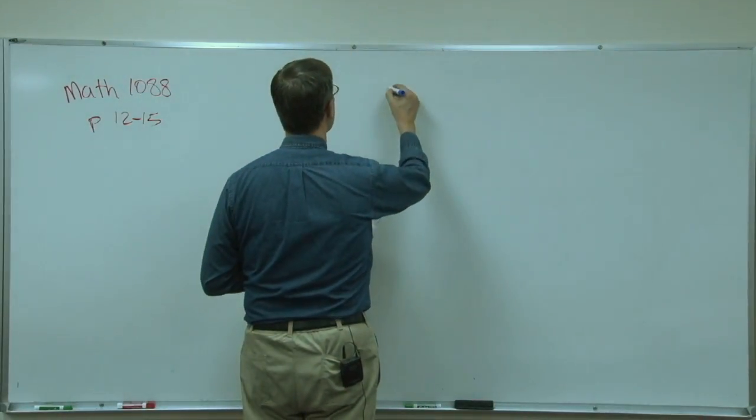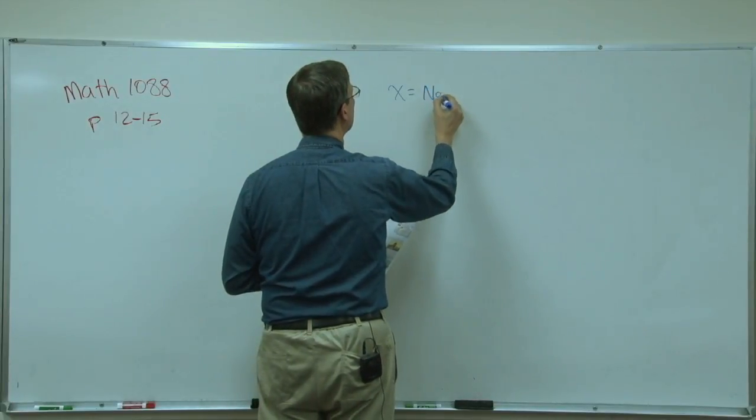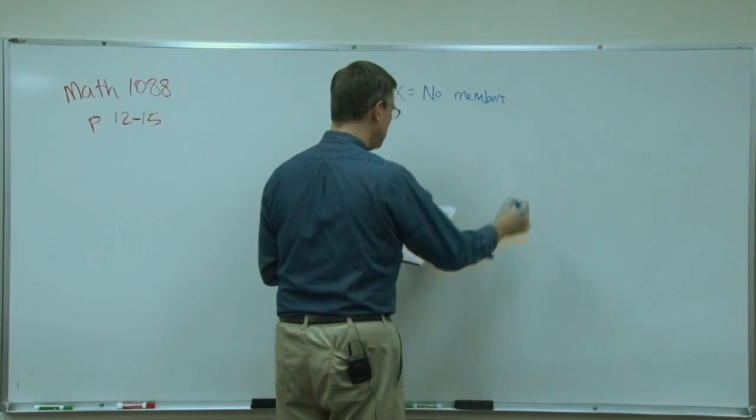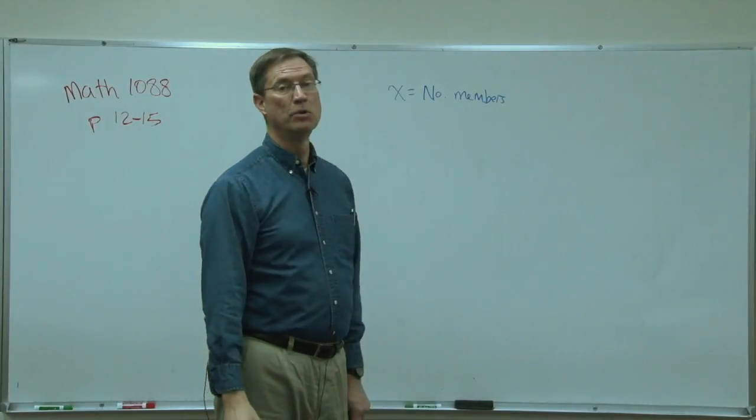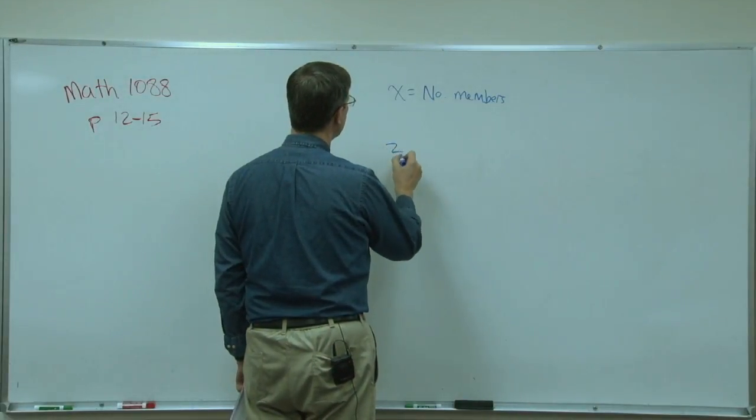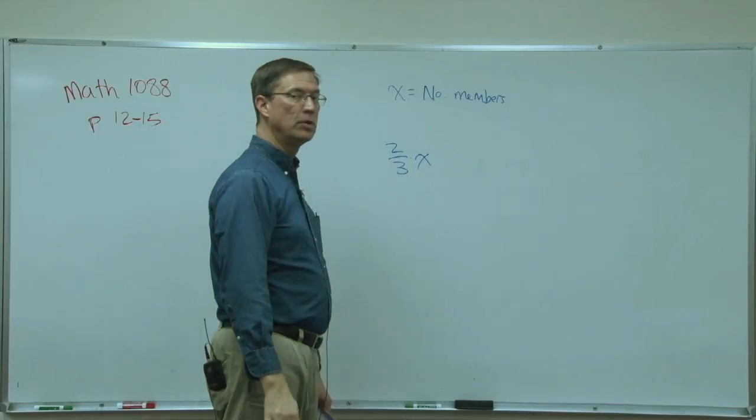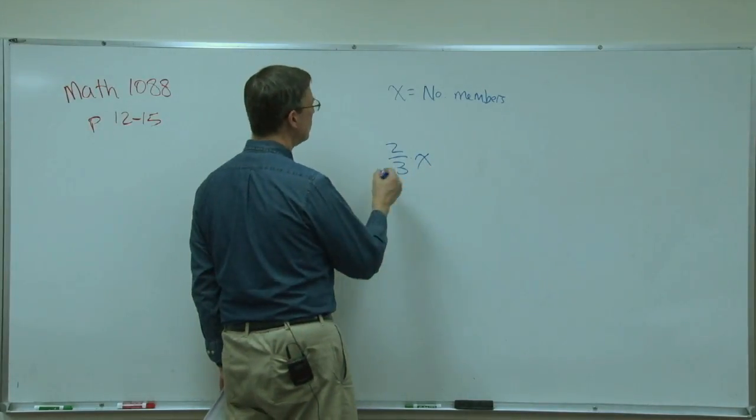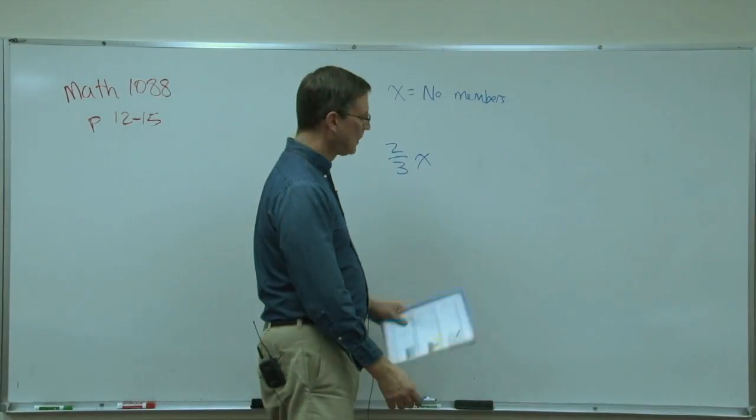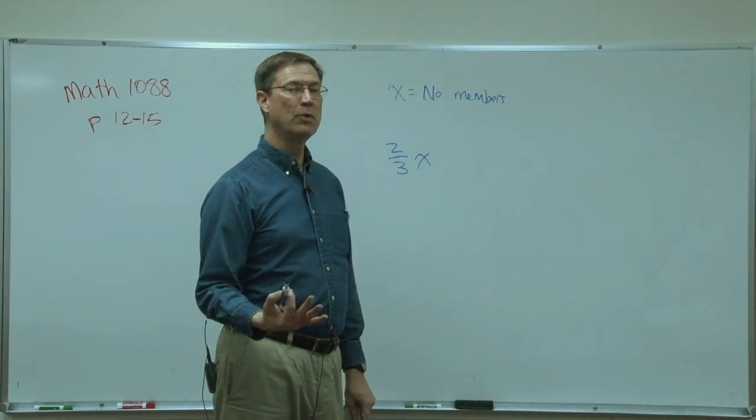We're going to let X equal the number of members. Because that's what we're asked to find. How many members does the church have. So X is the number of members. Two thirds of X. So two thirds times X. And of course, we could write that as 2X over 3. It'd be the same thing. But then it says that two thirds of them maybe registered for the banquet.